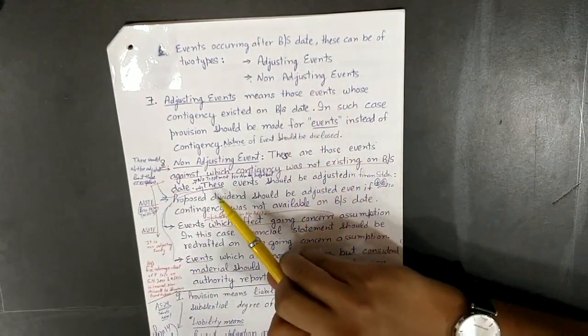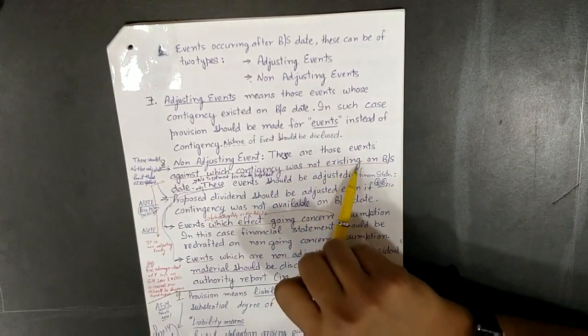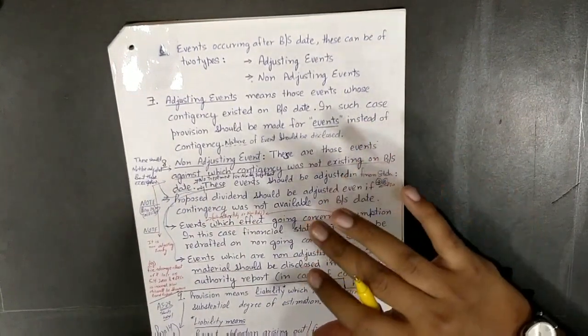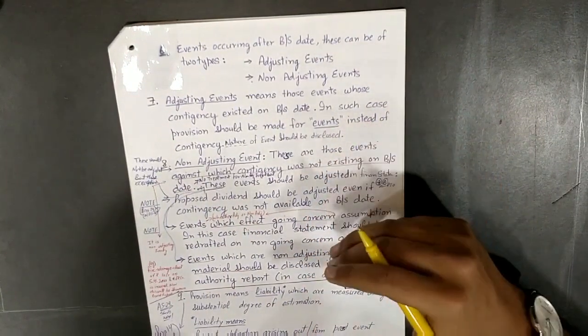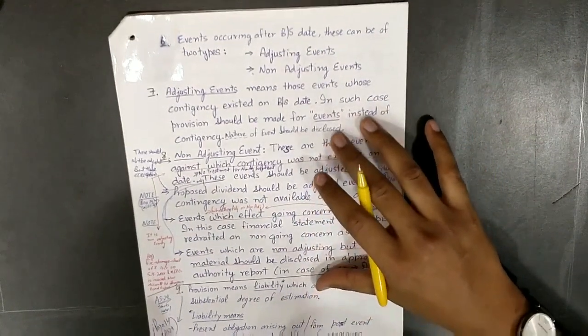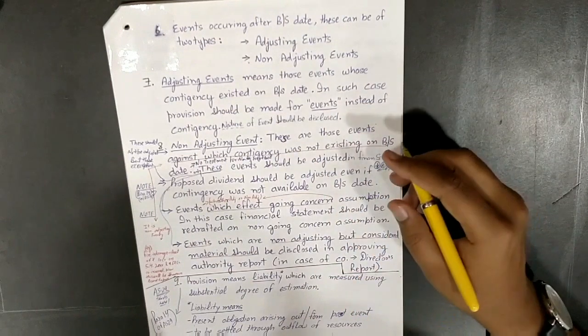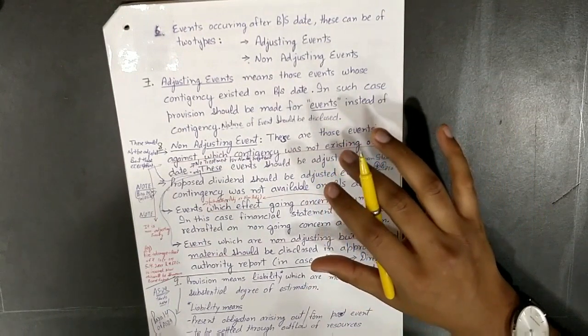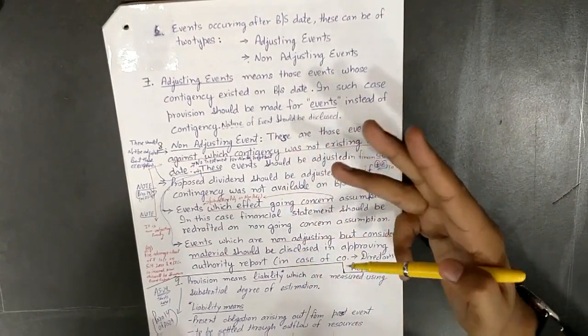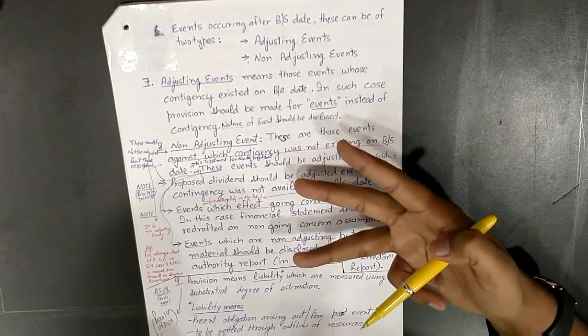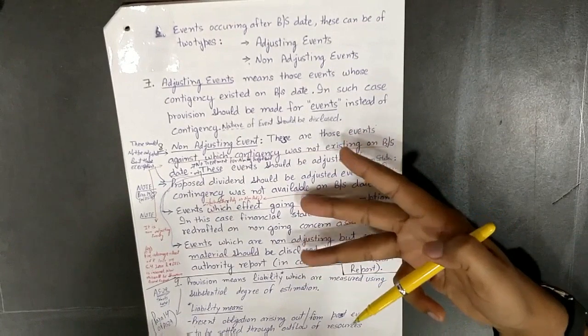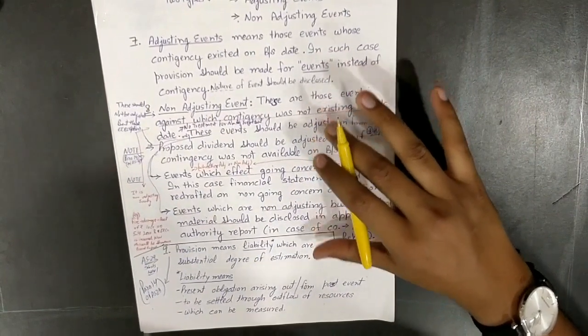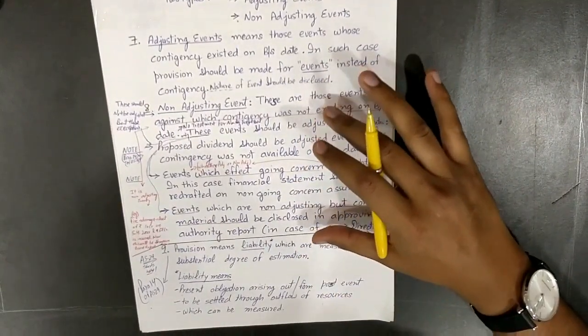Non-adjusting events are those events against which contingency was not existing on balance sheet date. But for non-adjusting events there are exceptions - for three non-adjusting events we still have to adjust those in the financial statement.